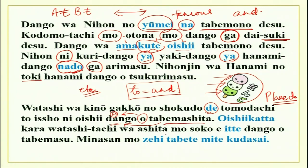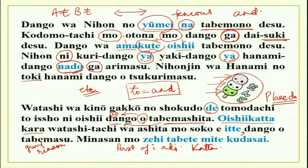Oishikatta kara watashitachi wa ashita mo soko he itte dango wo tabemasu. Oishikatta is past tense of an i-adjective. Kara gives the reason — it was very tasty, therefore tomorrow also we will go there and eat dango. The speaker could have closed the sentence by saying soko he ikimasu.